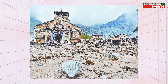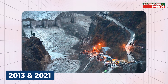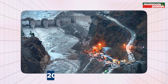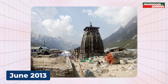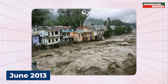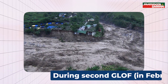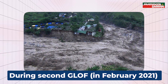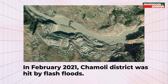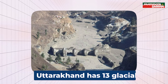Uttarakhand witnessed two major glacial lake outburst floods, in 2013 and 2021. In June 2013, glacial lake outburst floods affected large parts of the state, with Kedarnath being the worst hit. During the second GLOF in February 2021, Chamoli district was hit by flash floods. Uttarakhand has 13 glacial lakes prone to GLOF.